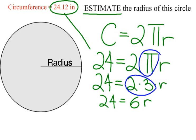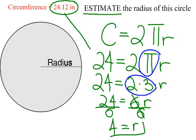6r means 6 times r. That means if I want to solve for r, I will go ahead and divide both sides of my equation by 6. 24 divided by 6 is 4, equals 6 divided by 6 is 1r, which is the same as r. That means my radius is approximately, that means close to, 4 inches. Notice your circumference was given to you in inches, that's why your radius is also going to be in inches.